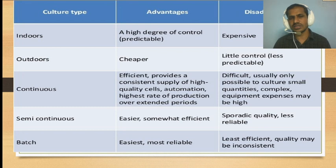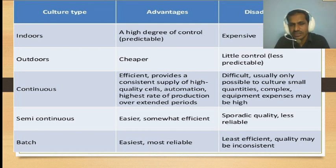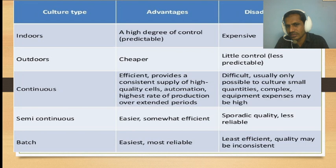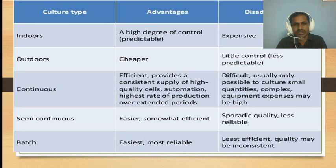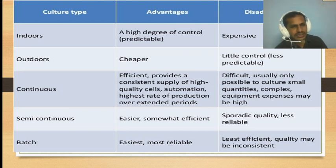The advantages and disadvantages of each type: indoor culture gives a high degree of control but is expensive. Outdoor culture is cheaper but has less control and is less predictable. Continuous culture is efficient and provides a consistent supply of high-quality output, but it is complex and only possible for small quantities. Semi-continuous is somewhat easier. Batch culture is the easiest and most reliable, but it is least efficient and quality may be inconsistent.